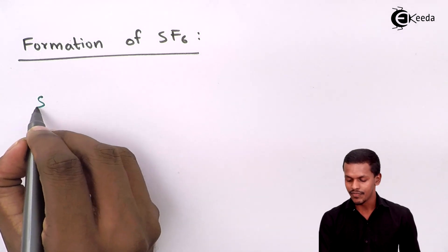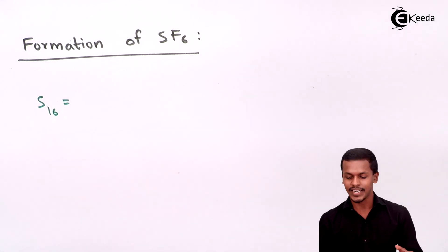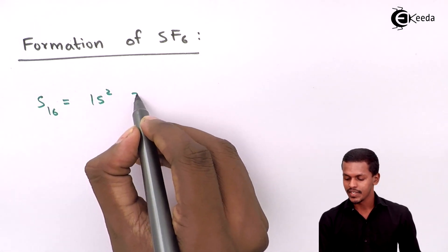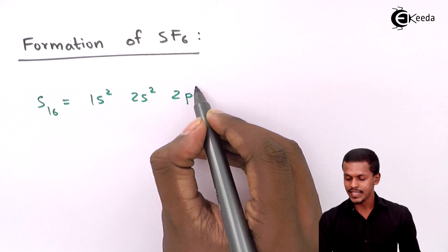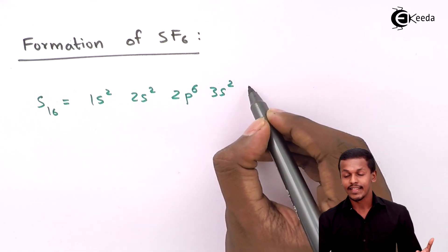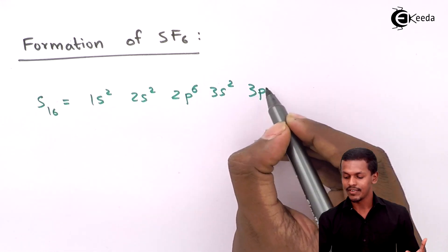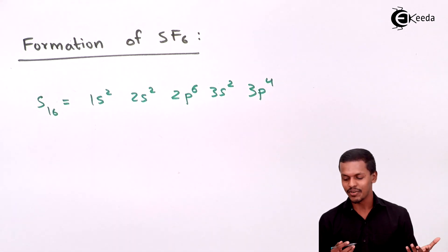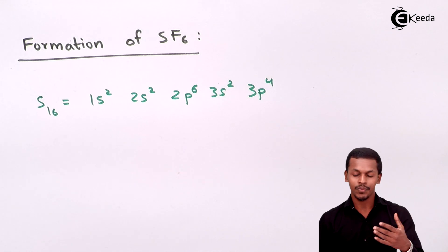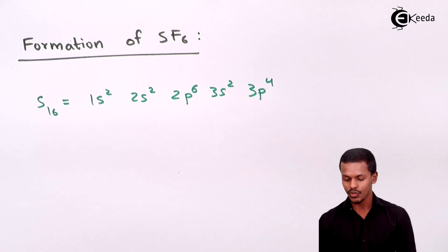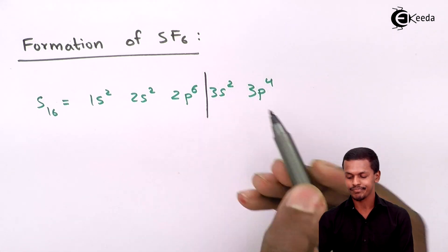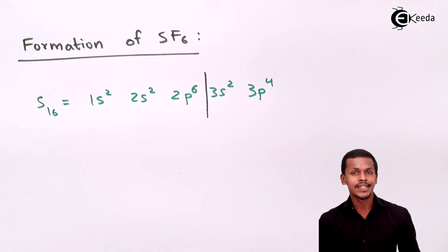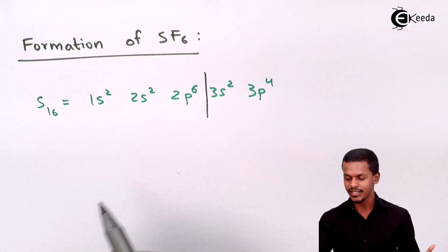Sulfur (atomic number 16) has the electronic configuration: 1s², 2s², 2p⁶, 3s², 3p⁴ — giving 16 electrons total. However, we are concerned with the outermost shell, and now let us understand the orbitals that are present there.